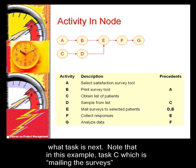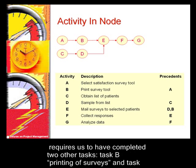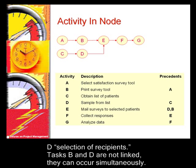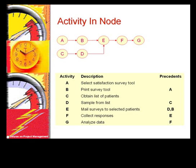Note that in this example, task C, which is mailing the surveys, requires us to have completed two other tasks: task B, printing a survey, and task D, selection of recipients. Task B and D are not linked — they can occur simultaneously.